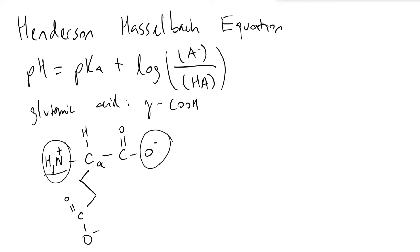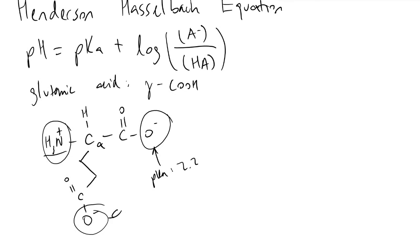We can look up the tabulated pKa values for each functional group within this biomolecule. The C-terminal carboxylic acid has a pKa of 2.2. The R-group's pKa has a value of 4.3. And the amine on the N-terminus has a pKa of 9.7.